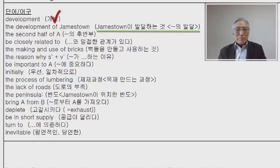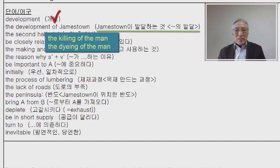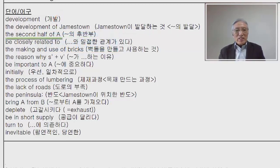타동사의 경우 보통 목적어를 취합니다. 예를 들어 'the killing of the man'은 그 남자를 죽이는 것(목적), 'the dying of the man'은 그 남자가 죽는 것(주어)입니다. 둘 다 'of the man'이지만 의미가 다릅니다. 다음으로, 'the second half of ~'는 '무엇의 후반부'를 뜻합니다.